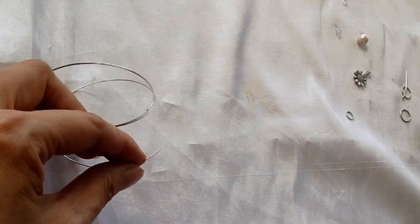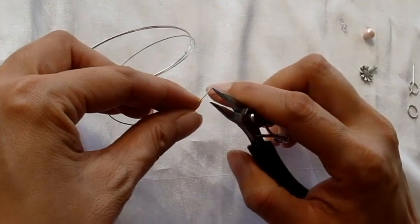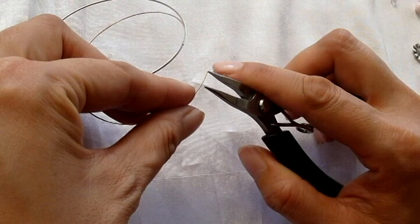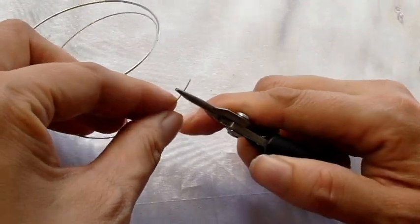To make a loop, measure about 0.5 or 0.6 centimeter from the end and bend it to 90 degrees.